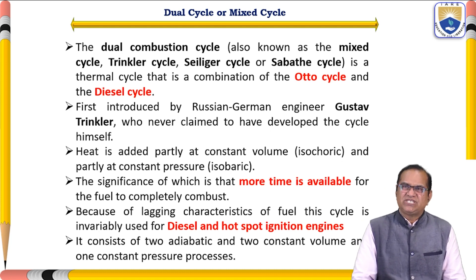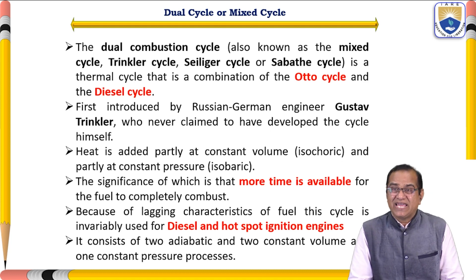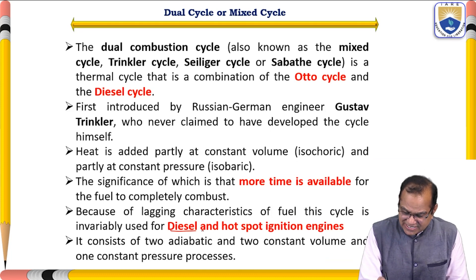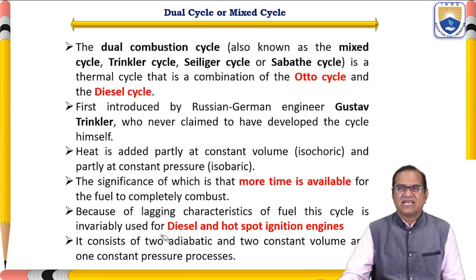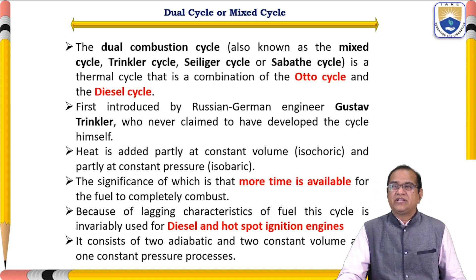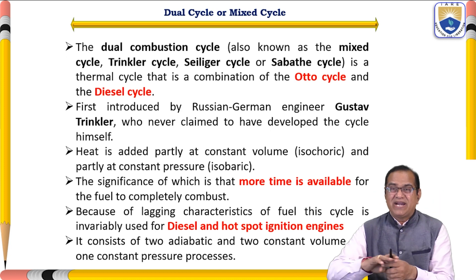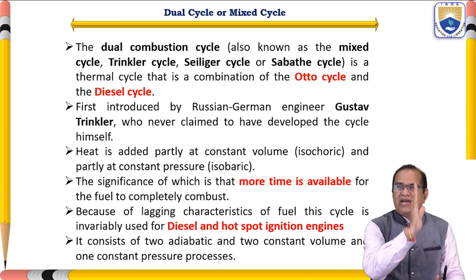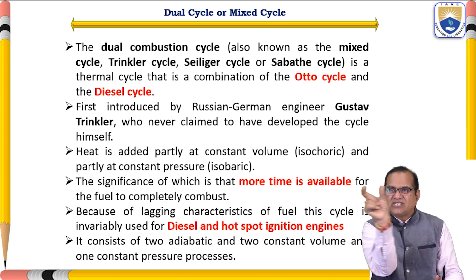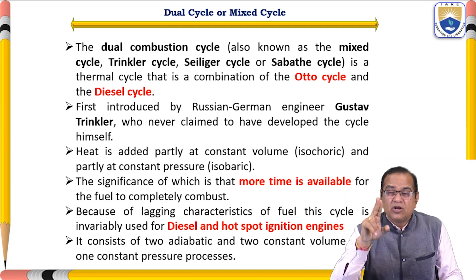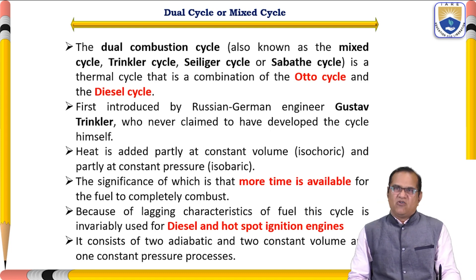The significance of this is that more time is available for the fuel to completely combust. Because of the lagging characteristics of fuel, this cycle is invariably used for diesel and hot-spot ignition engines. It consists of two adiabatic processes, two constant volume processes, and one constant pressure process: one adiabatic compression, one constant volume ignition, then constant pressure expansion, another adiabatic expansion, and constant volume heat rejection.